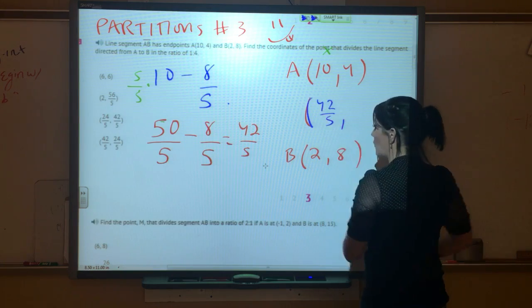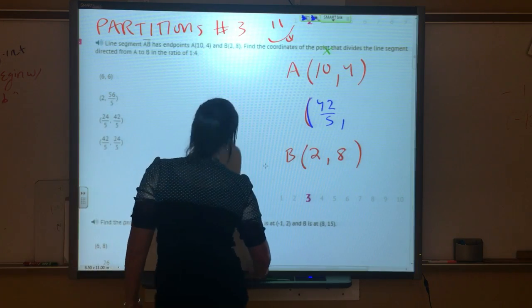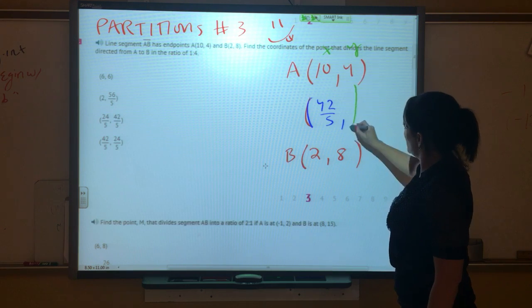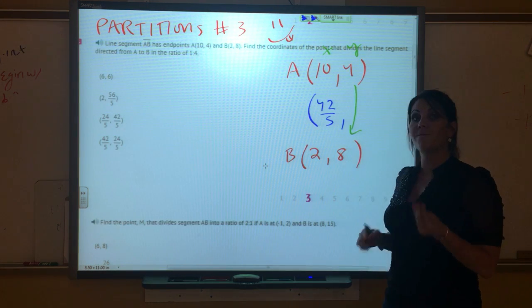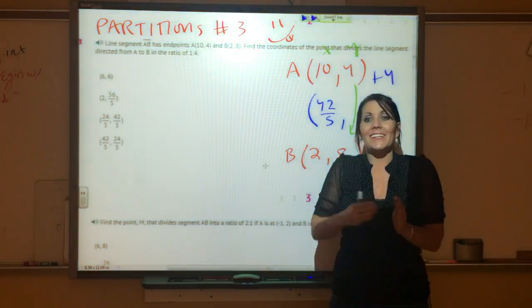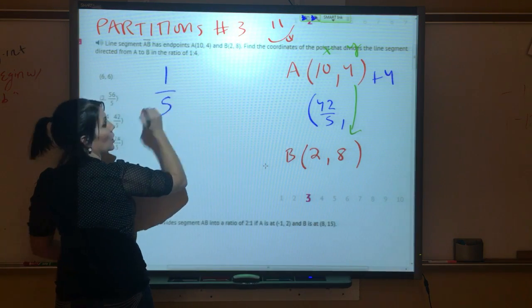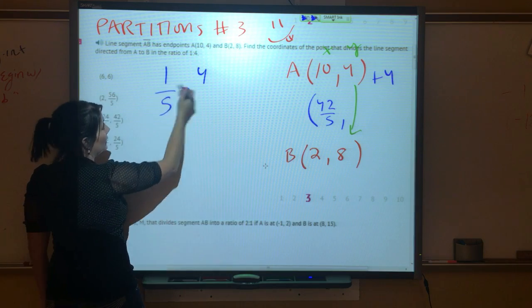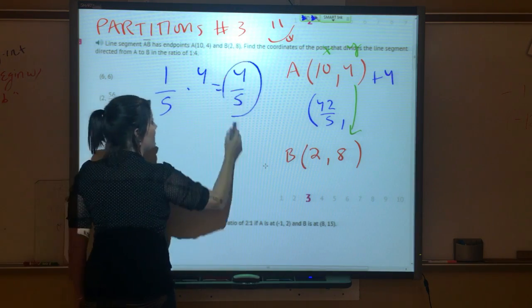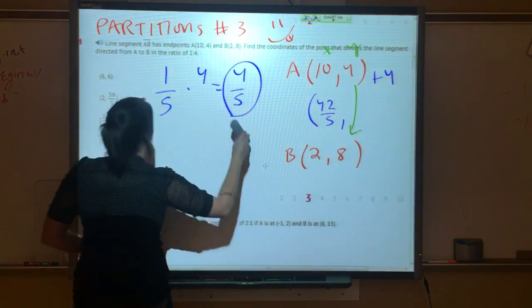Moving on, same type of thing, guys. With our y's, how do we get from here to here? Well, from 4 to 8, we are adding 4. But remember, that is 100%. We do not want to go 100%, we want to go one-fifth of that. So again, we are going to add 4/5 to this y value. That's one-fifth of the way.